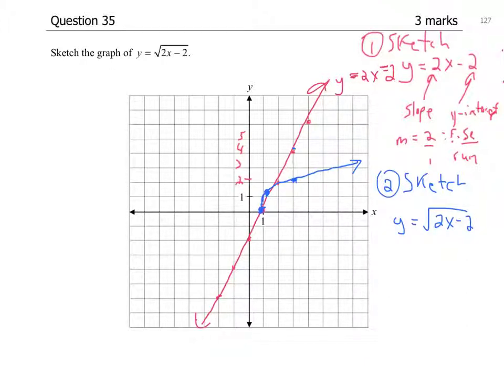So your graph of the square root of 2x minus 2 is done. And notice the domain in set notation is x is greater than or equal to 1.0. Thank you.